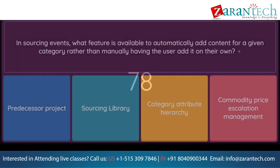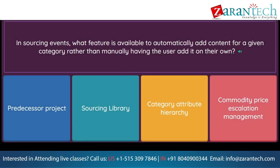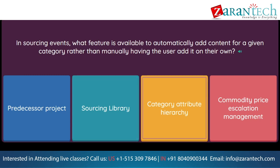Question: In sourcing events, what feature is available to automatically add content for a given category rather than manually having the user add it on their own? Option 1: predecessor project. Option 2: sourcing library. Option 3: category attribute hierarchy. Option 4: commodity price escalation management.